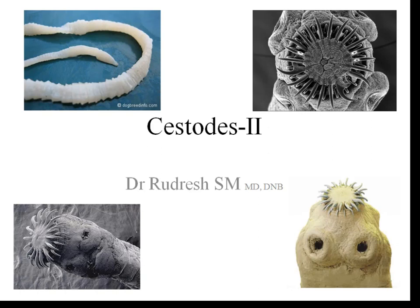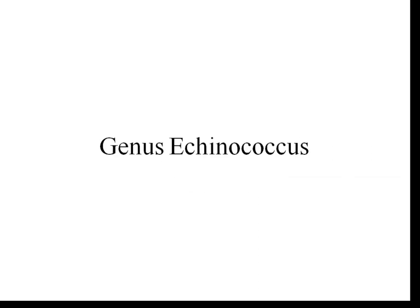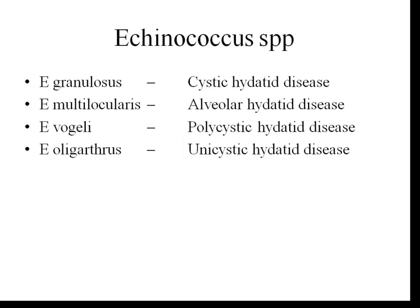In this lecture, we will continue with the Cestodes part 2. I will discuss the genus Echinococcus. The genus Echinococcus has four important species which cause human infection: Echinococcus granulosus which causes cystic hydatid disease, Echinococcus multilocularis which causes alveolar hydatid disease, Echinococcus vogeli which causes polycystic hydatid disease, and Echinococcus oligarthrus which causes unicystic hydatid disease. Echinococcus granulosus and Echinococcus multilocularis are the most commonly infecting agents.